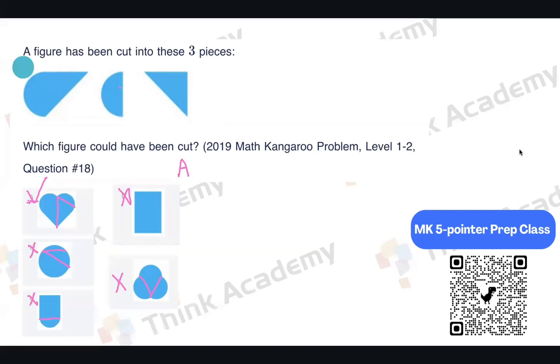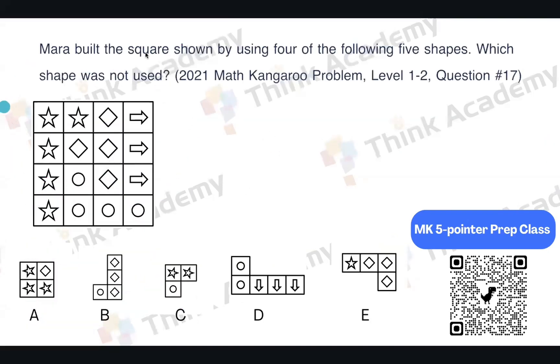Okay, so now let's move on to the next question. Mara built the square shown below. So this is a square she built. And how did she build it? She used four of the following five shapes. So that will be the five shapes here. A, B, C, D, E. And then we want to know which shape hasn't been used. Okay, so how to solve this question?